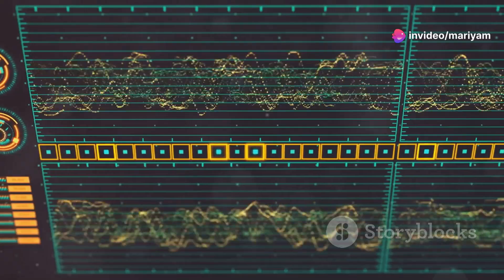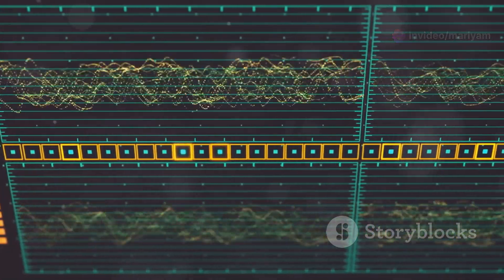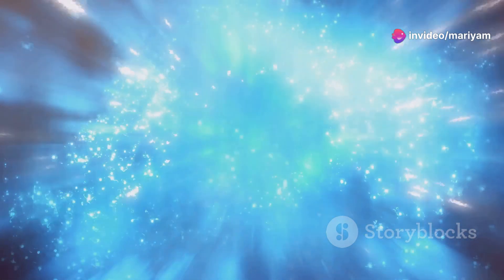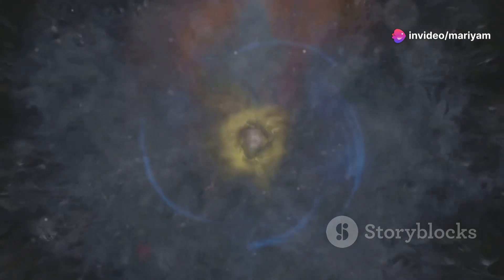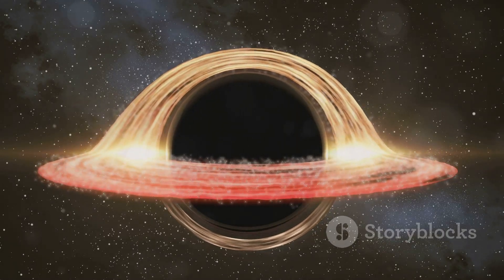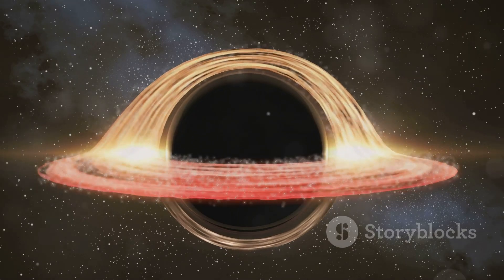Types of pulsars. Pulsars come in various types. The most common are rotation-powered pulsars, deriving their energy from the rotation of the neutron star. Another type is the millisecond pulsar, rotating hundreds of times per second. These pulsars have been spun up by accreting material from a companion star.